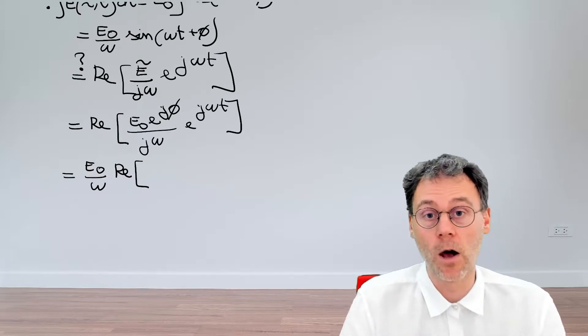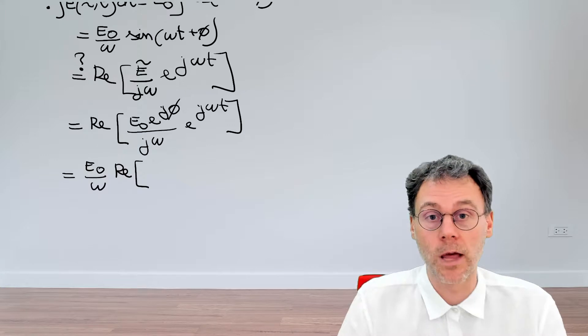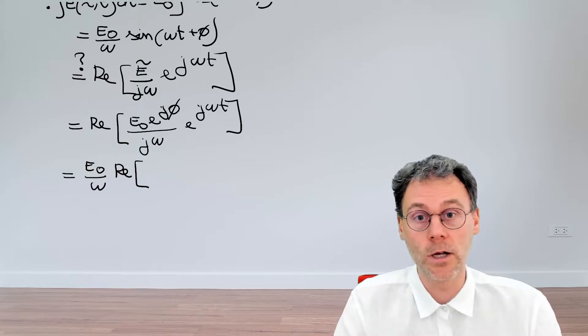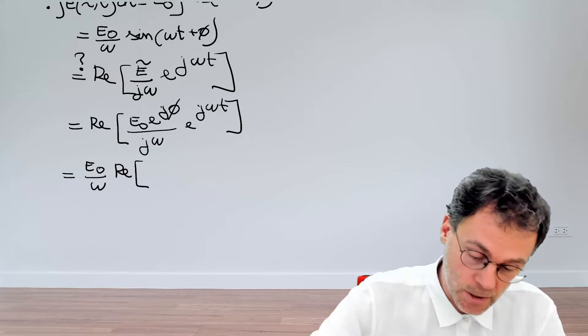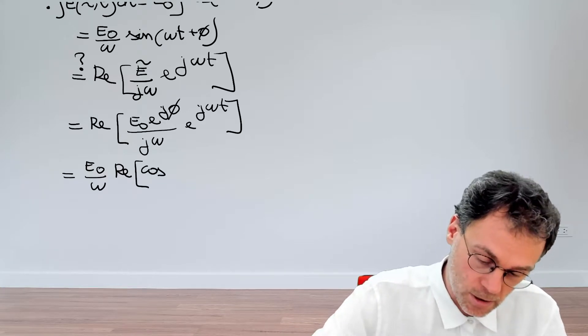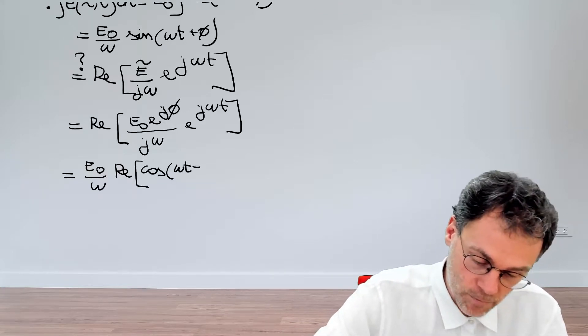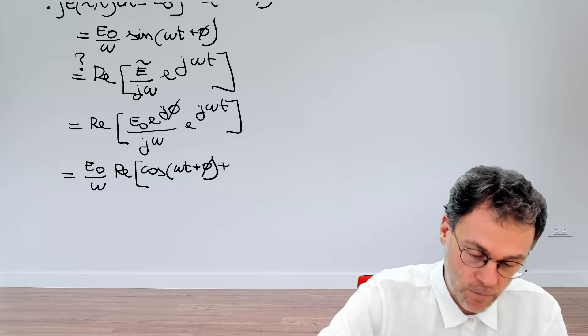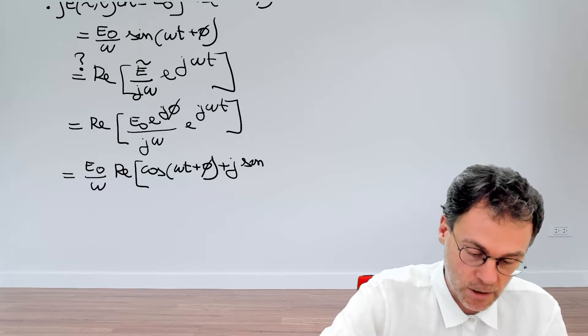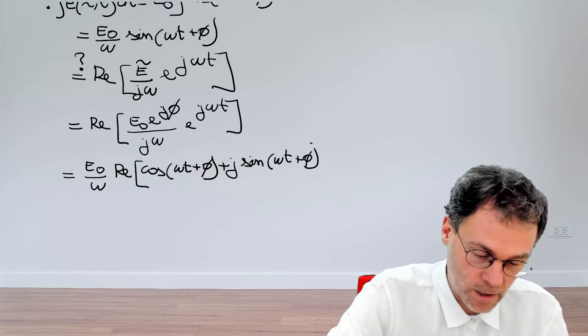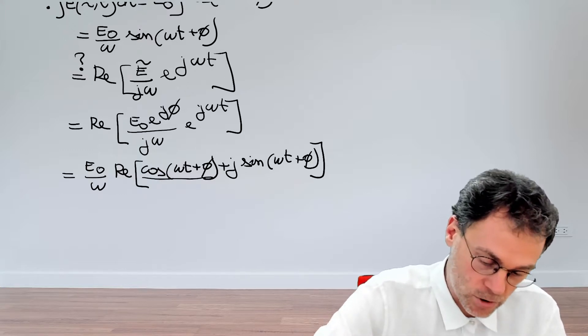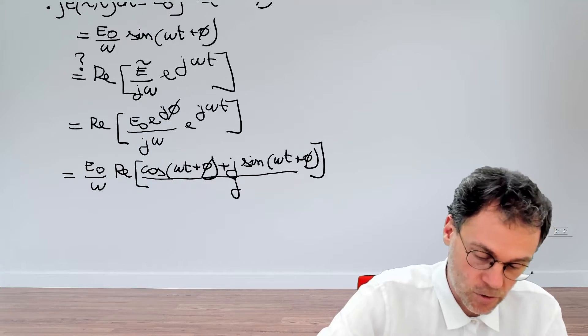then, what we're left with is the real part of a complex exponential. But thanks to our good friend Euler, we know that this is equal to cosine plus j sine. So, in our case, that becomes cosine(ω t + φ) plus j sine(ω t + φ). And then, we shouldn't forget, of course, the j here in the denominator.